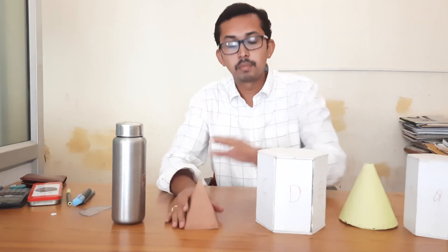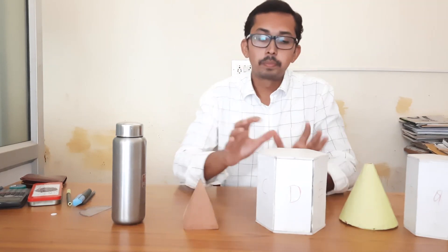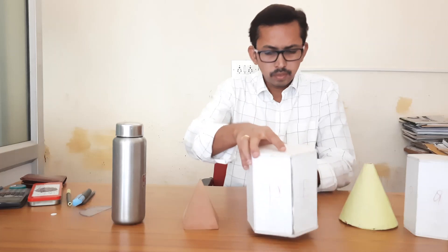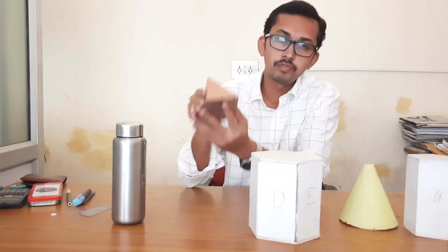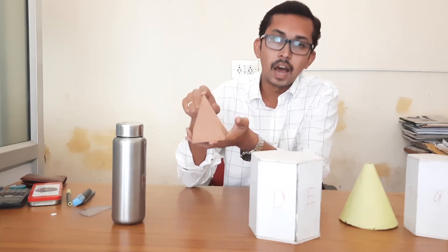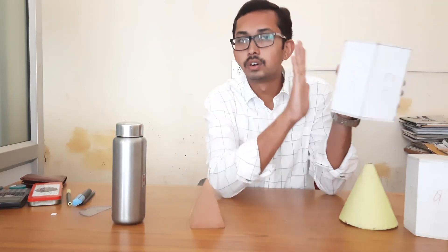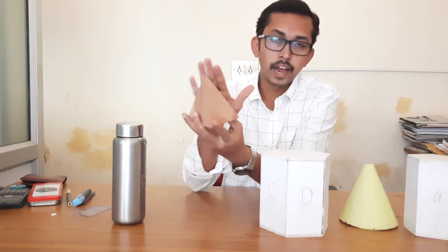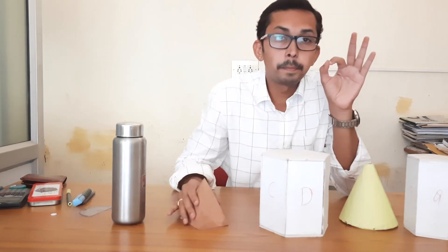So to summarize: a prism is having a bottom face as well as a top face, whereas a pyramid is having a bottom face and an apex. In the case of a prism we have vertical rectangular faces, whereas in the case of pyramids we have slant triangular faces.